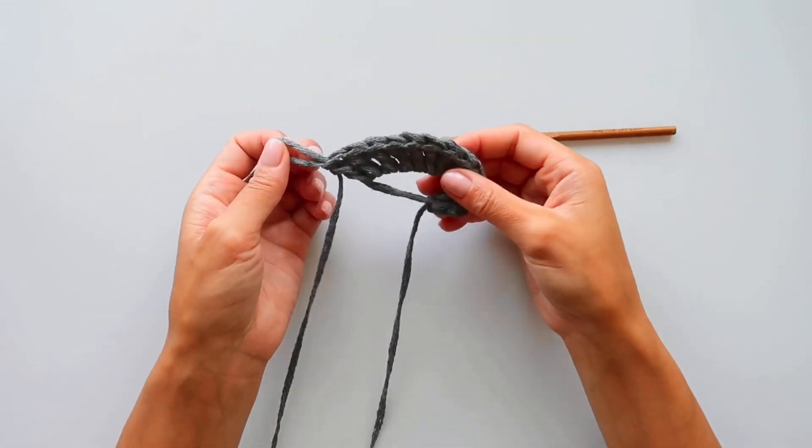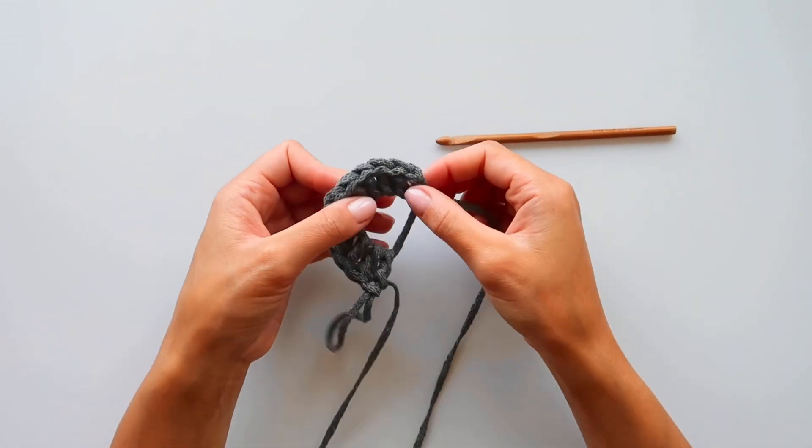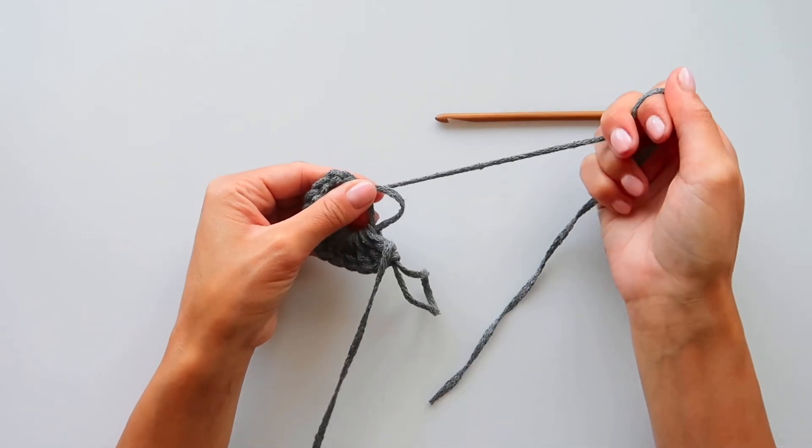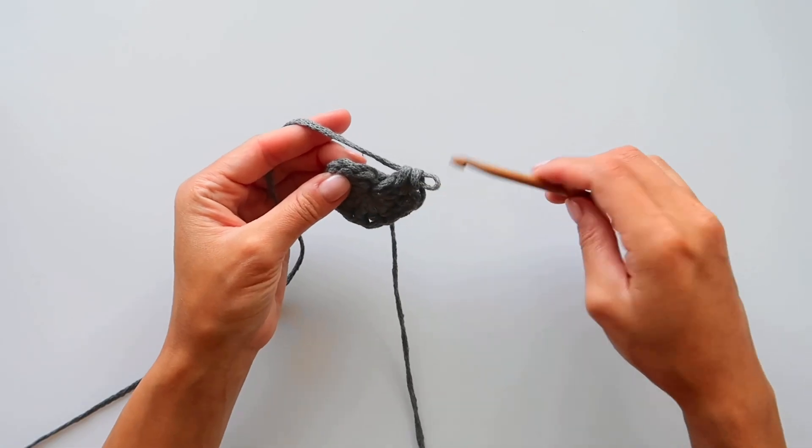So now is the fun part. We will tighten this ring, and in the shortest piece of yarn we will pull, pull, pull.